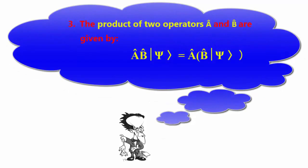3. The product of two operators A and B are given by AB|ψ⟩ = A(B|ψ⟩).